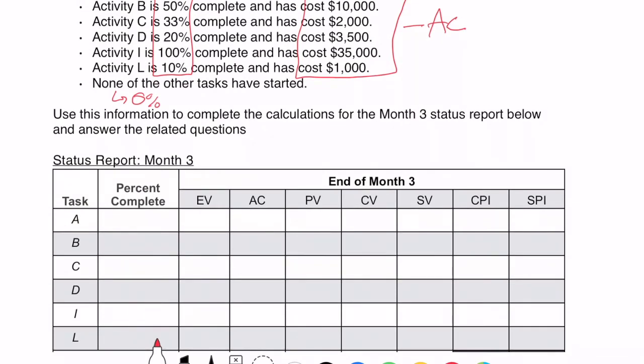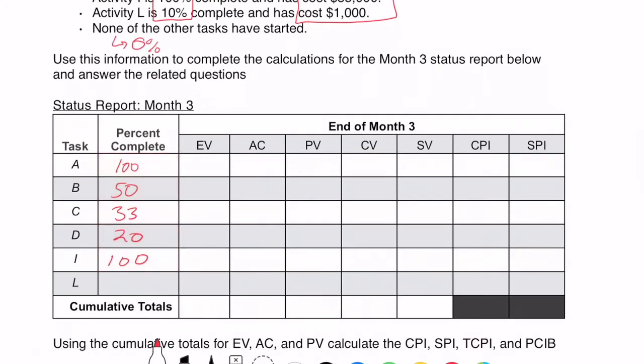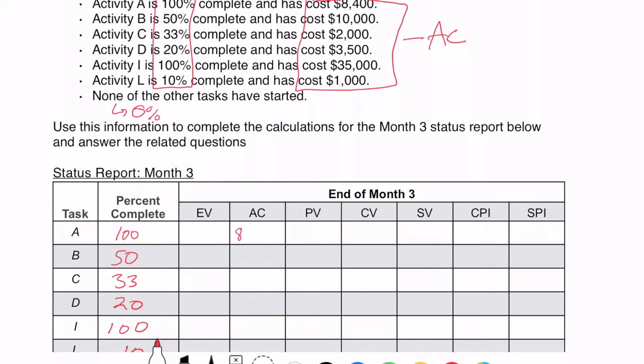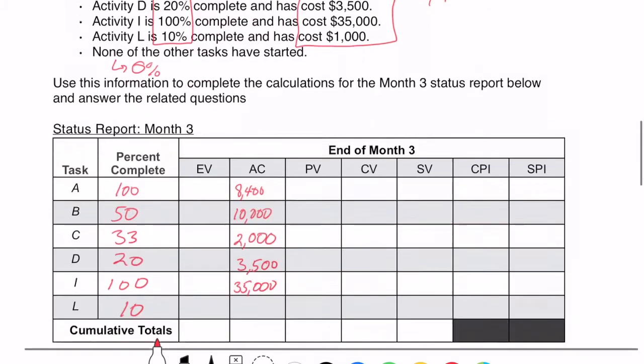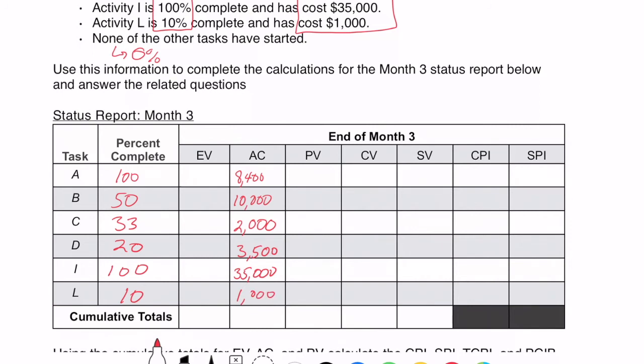Okay, so if we look at the percent complete, and we just transfer that down here. And then we want to calculate out these different values. Well, our actual cost is given. So we'll just write those in here. Make sure I didn't get off track here. And if my math is correct, if I add all those up, I should get something like $59,900.